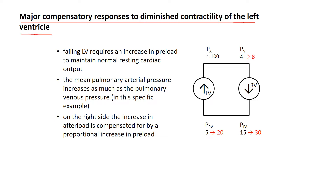We're going to start out by thinking in terms of this very simple diagram — looks simple, but maybe it's deceptively simple. Here we're looking at the cardiovascular circuit where the left ventricle pumps blood to the systemic circulation and the right ventricle pumps blood to the lung.